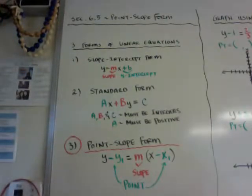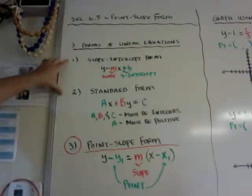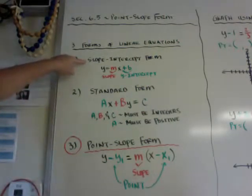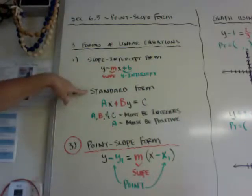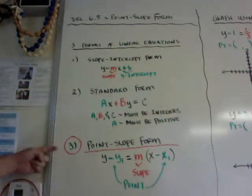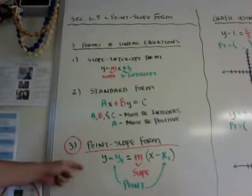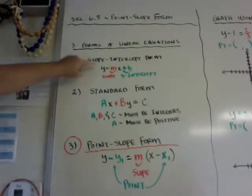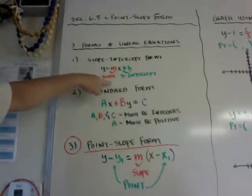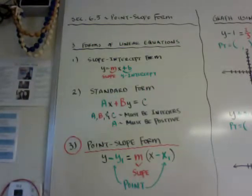Hi gang. This is section 6.5, which is the point-slope form. We already learned the first two forms of linear equations, which are slope-intercept — y equals mx plus b — and standard form, which is ax plus by equals c. So this one is point-slope form. If you just have one point and the slope, you can write an equation. In slope-intercept, you needed the y-intercept and the slope. With point-slope, you can use any point — it doesn't have to be the y-intercept.